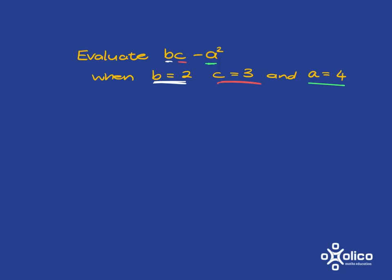So what we've got is 2 multiplied by 3. And then after that, we need to subtract a squared, and a, we are told, is 4. So it's 4 squared.